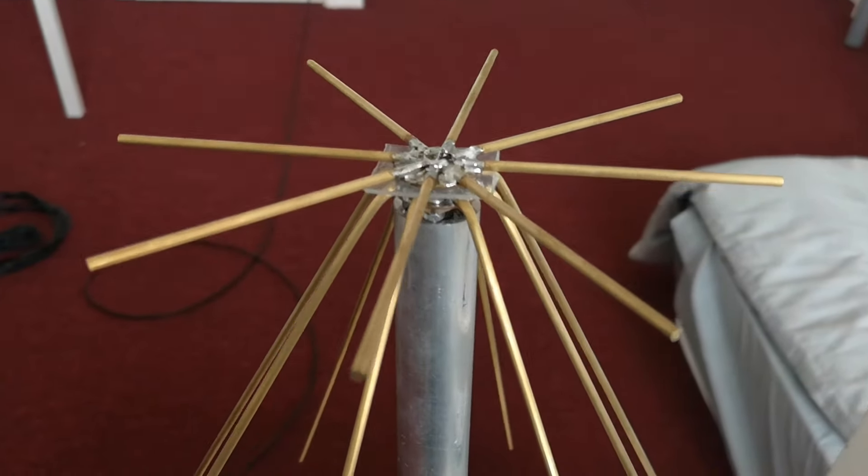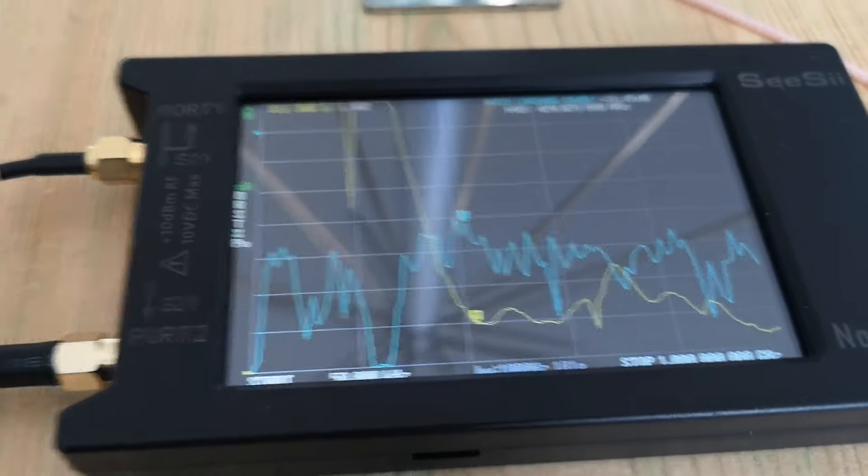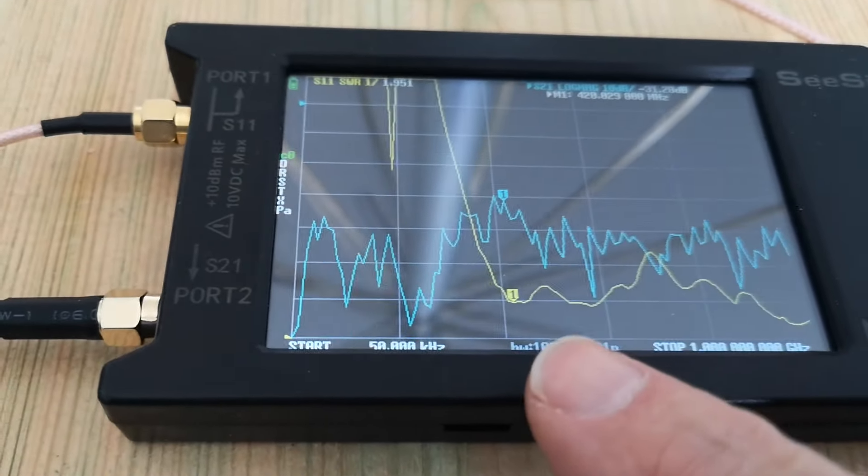And if we look at the parameters down here, sorry about all the different curves and the reflections, the yellow curve is the SWR, and you can see, actually I put a marker there. That marker, number one, there, is at 420 megahertz.